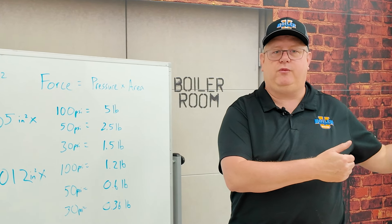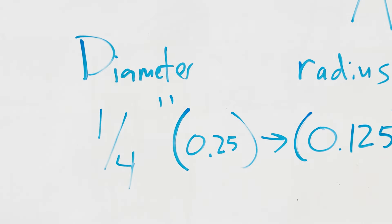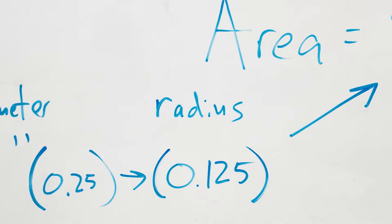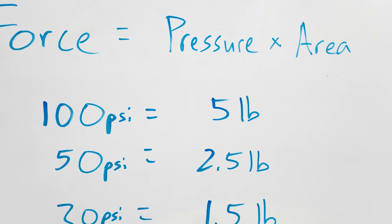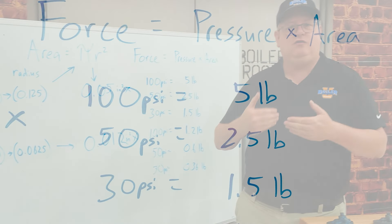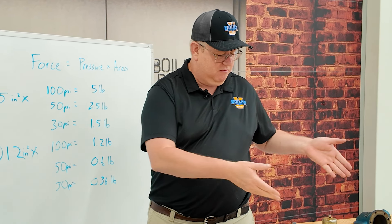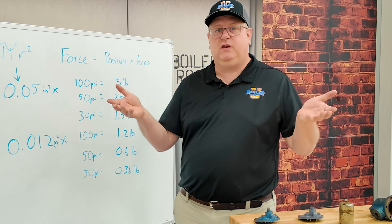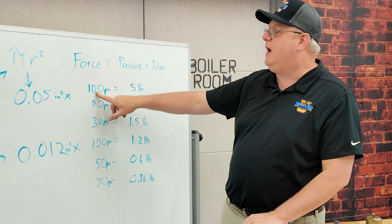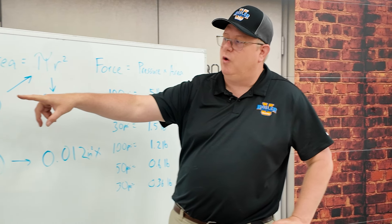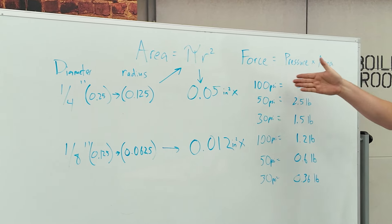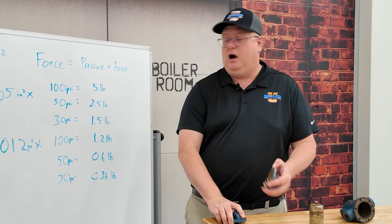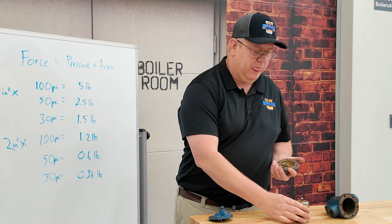For our purposes, we're going to assume the downstream pressure is zero. If we look at our trap with a quarter inch orifice, we take that diameter, cut it in half to get the radius, run it through our pi times radius squared equation — that gives us the surface area of that opening. In an application with a proof pressure of 250 PSI and I put it on a 100 PSI application, that quarter inch orifice area times 100 PSI gives us a total force holding this trap shut of five pounds.